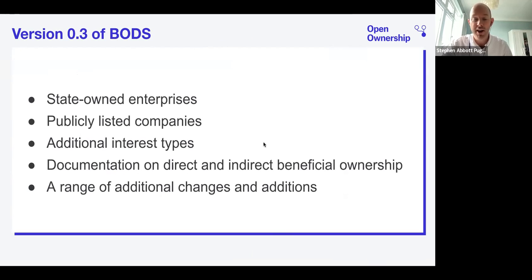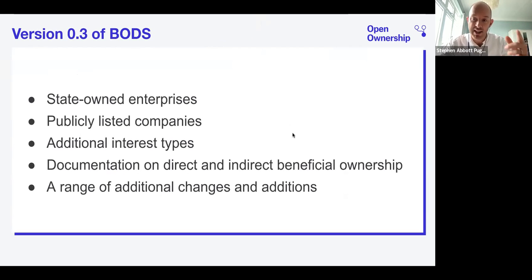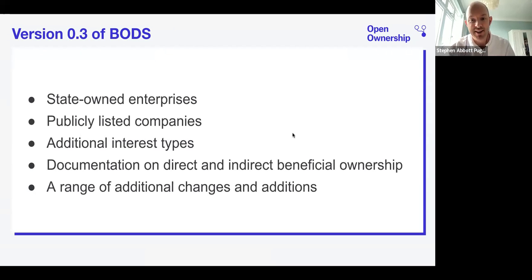The main features in version 0.3, launched about a month ago, include work on state-owned enterprises and publicly listed companies. We've expanded the range of interest types you can capture in BODS, provided more documentation relating to state-owned enterprises, and documentation on direct and indirect beneficial ownership and how best to model and represent that. This is our first new release in about three years, a culmination of a lot of work over that period.